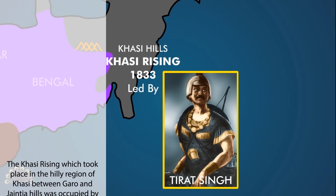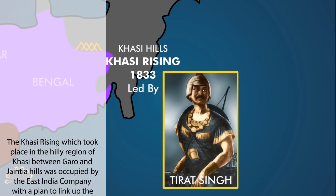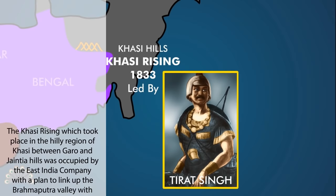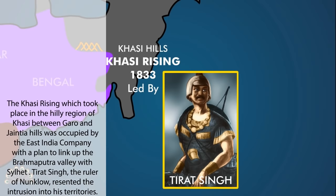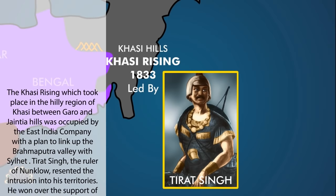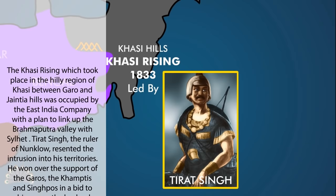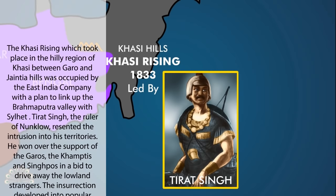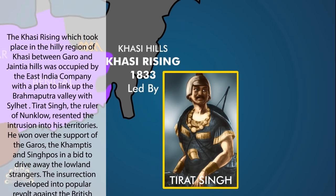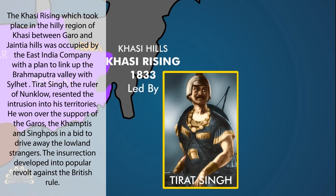The Khasi rising took place in the hilly region between Garo and Gentia Hills, which was occupied by the East India Company with a plan to link up the Brahmaputra Valley with Silhet. Tirat Singh, the ruler of Nanaklo, resented the intrusion into his territories. He won over the support of the Garos, the Khamtis and the Singhpals in a bid to drive away the lowland strangers. The insurrection developed into a popular revolt against British rule.